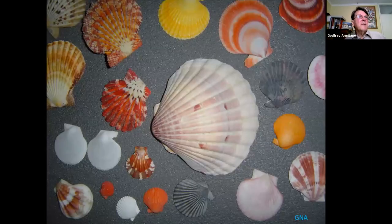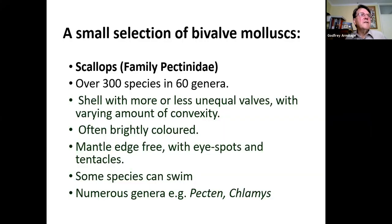These specimens from my small collection of scallops demonstrate biodiversity. Scallops from the family Pectinidae contain over 300 species in 60 genera. They're often brightly coloured shells with more or less unequal valves, with eye spots and tentacles; some species can swim. They're regarded as a delicacy. The UK species is Pecten maximus. Sustainable fisheries exist where they are captured by divers, but all too often they are trawled, leading to great habitat loss and carbon dioxide release from damaged marine sediments.